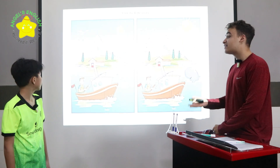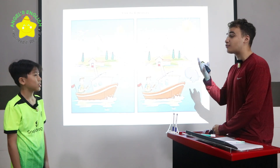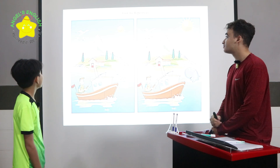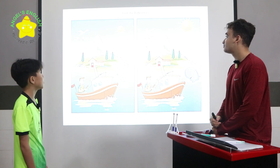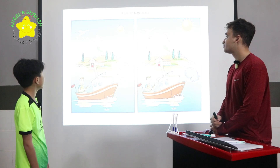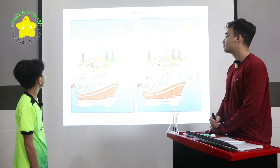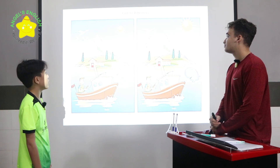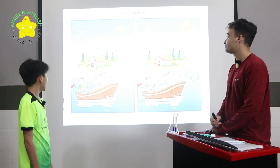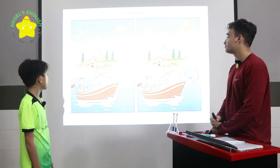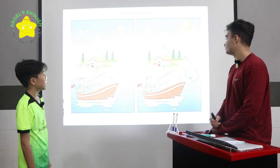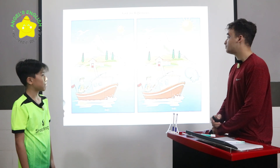Look at the two pictures. There are many differences between the two. Can you please tell me three differences? In picture one, there are three seagulls, but in picture two, there are five seagulls. In picture one, the sun is small, but in picture two, the sun is big. In picture one, there is a dolphin, but in picture two, there is a whale. Okay, very good.